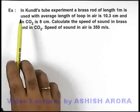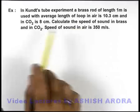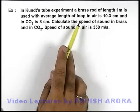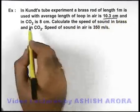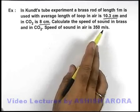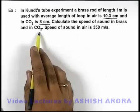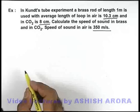In this example, we are given that in Kundt's tube experiment, a brass rod of length 1 meter is used with average length of loop in air is 10.3 centimeters and that in carbon dioxide is 8 centimeters. We are required to find the speed of sound in brass and in carbon dioxide. It is given that speed of sound in air is 350 meters per second.